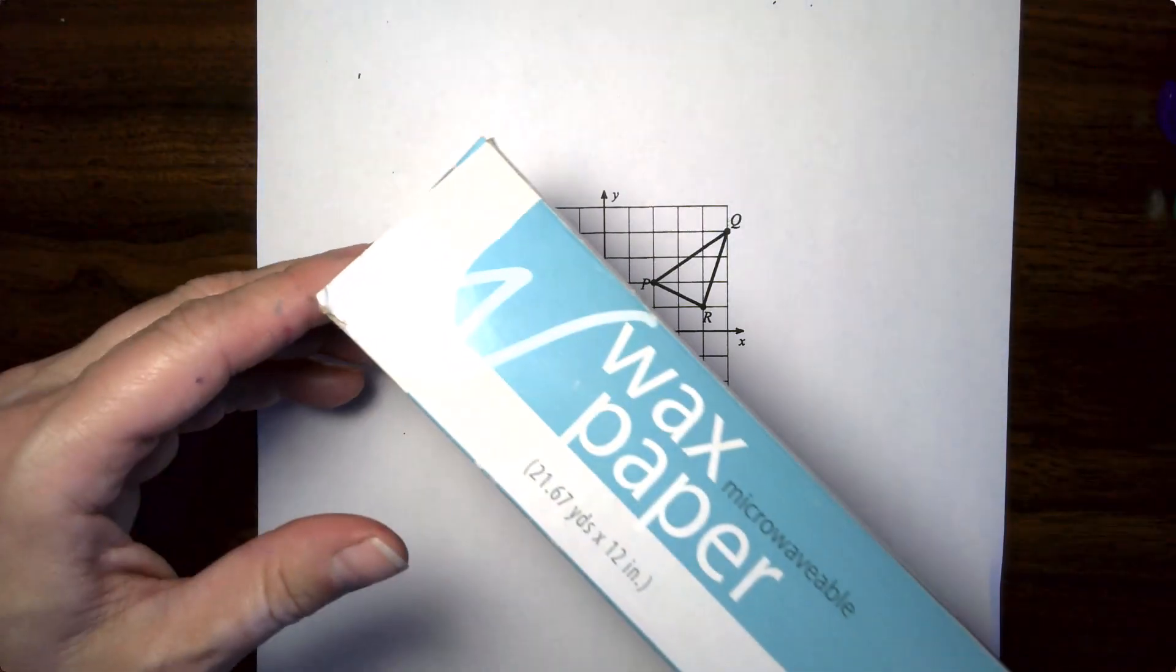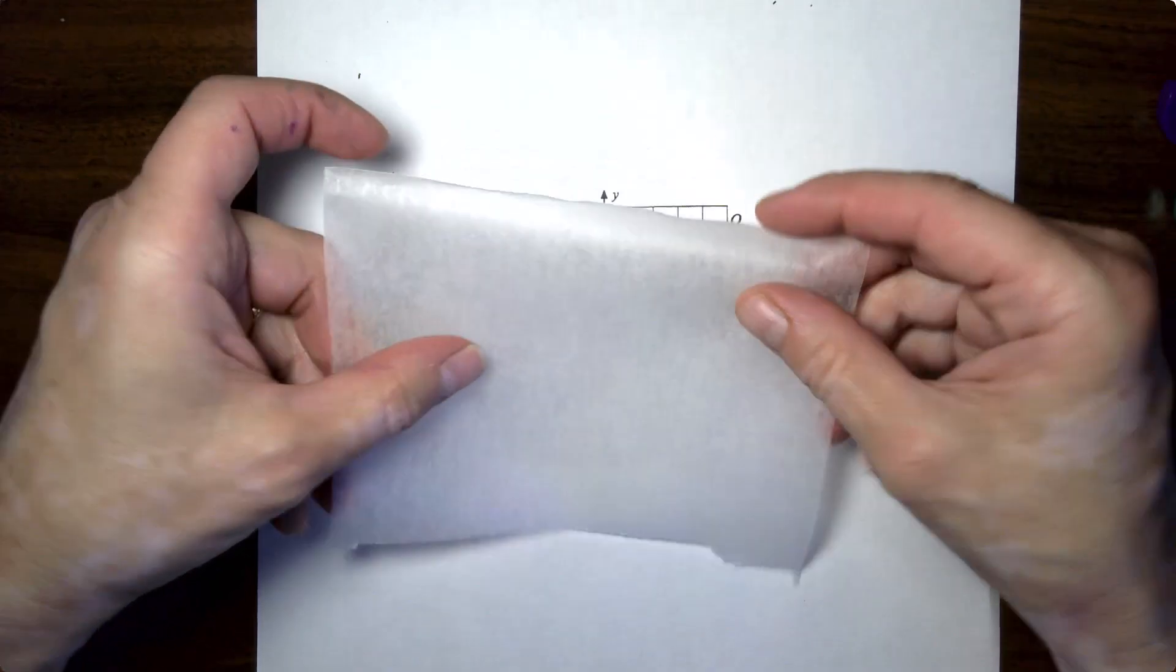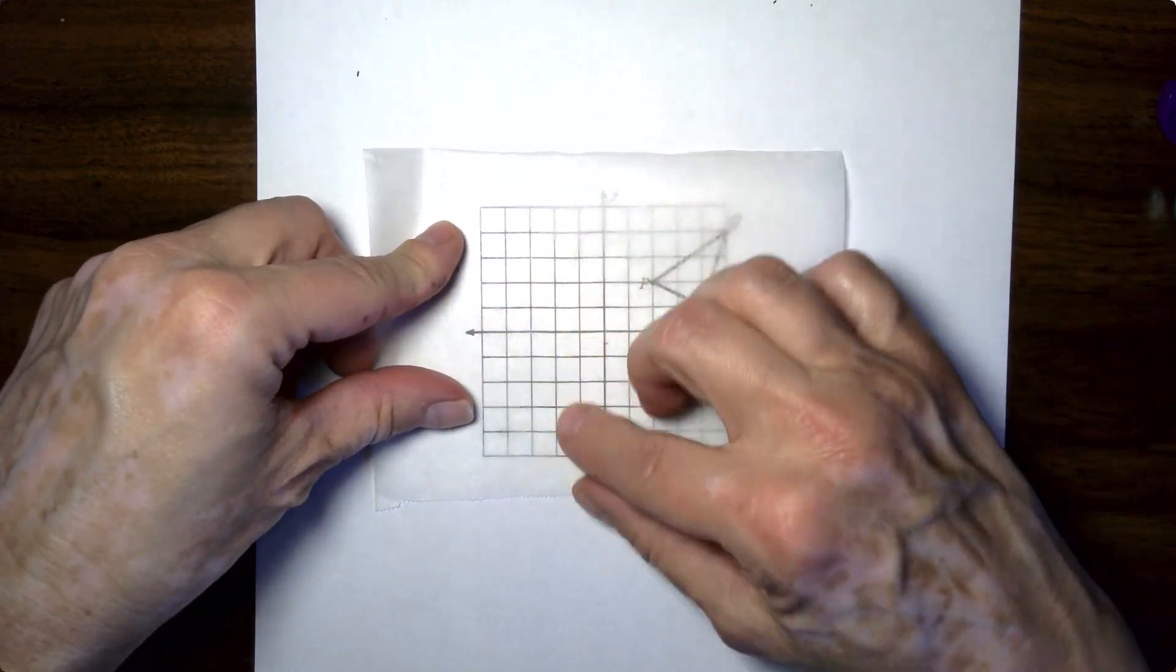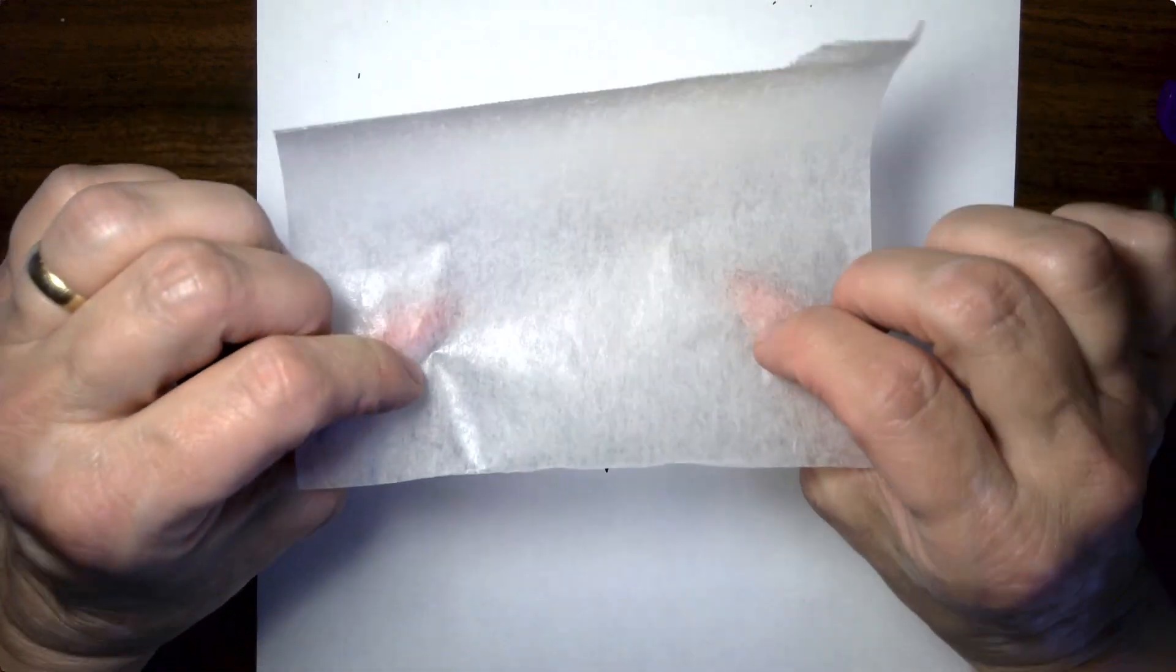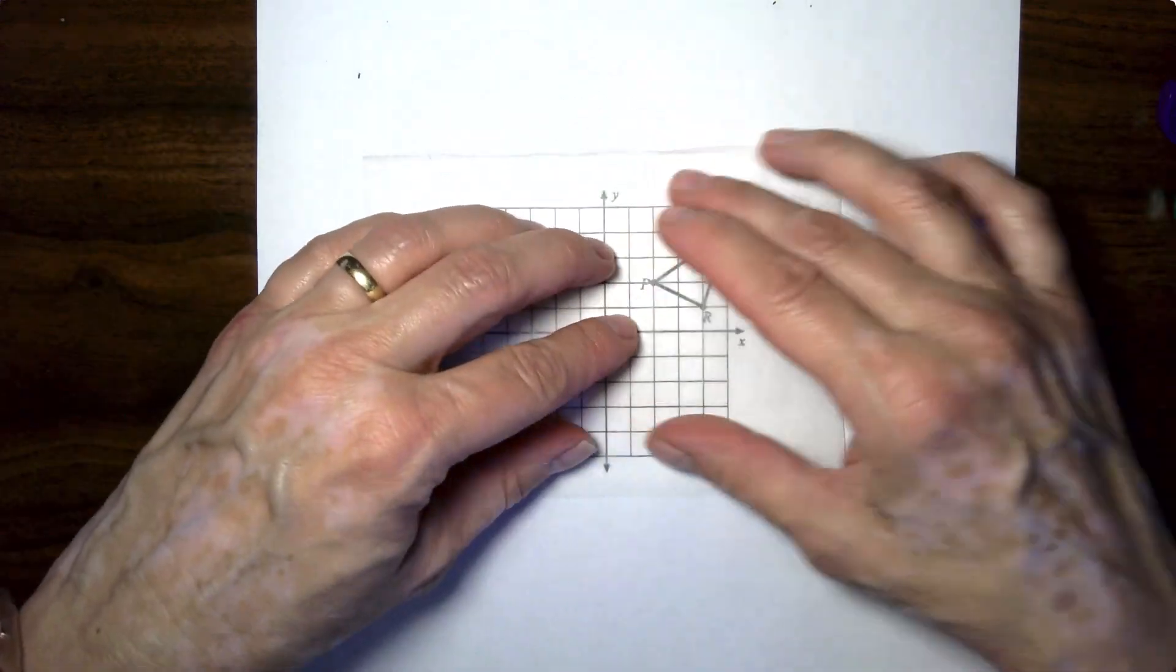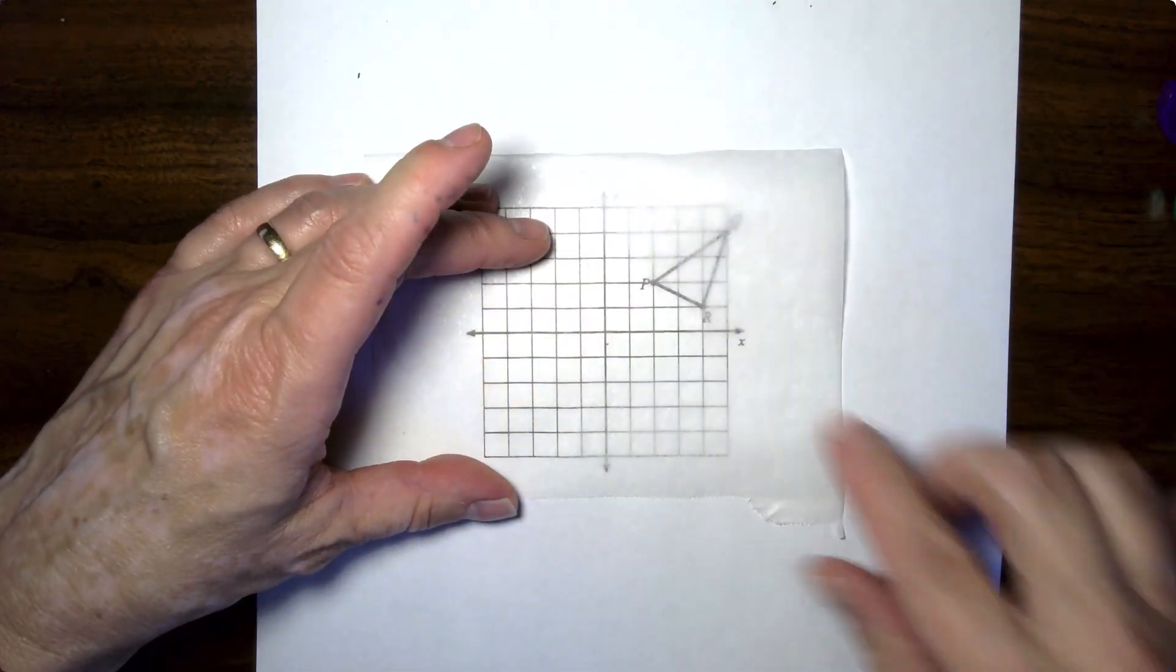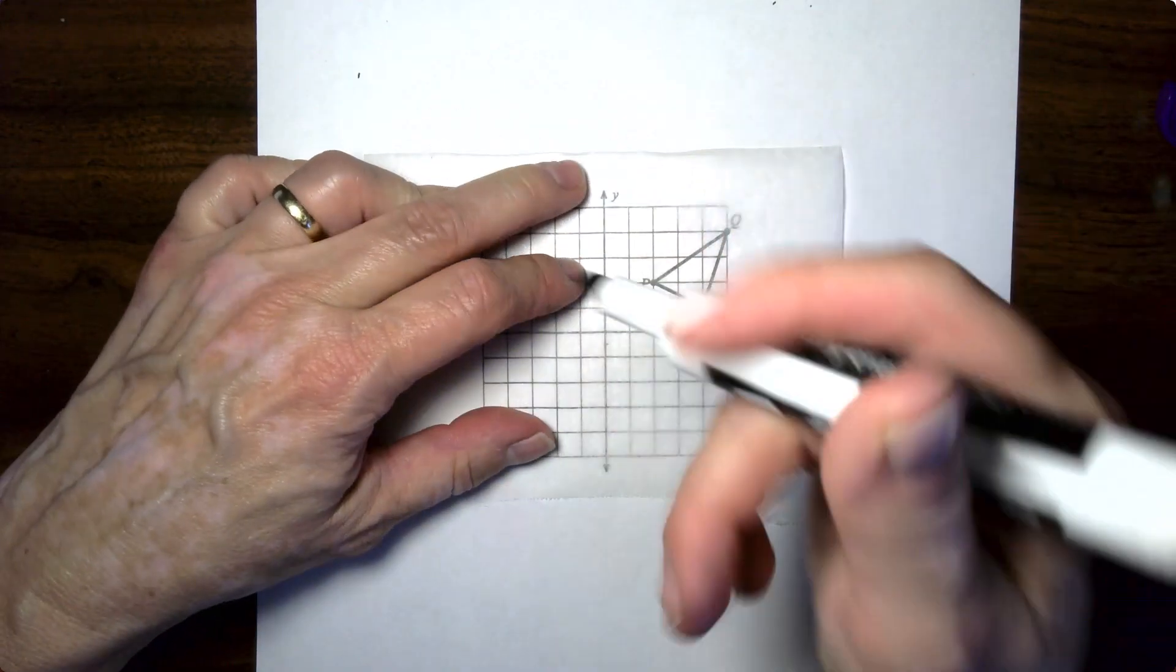I got wax paper at home and you can get those at the grocery store. You have to look around for those. You just need something you can see through and write on. If you're using wax paper, you don't want to write on the part that has the wax on it, obviously. So I took a big piece of wax paper, cut it up, and we are going to trace the axes and the shape.